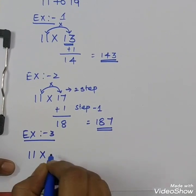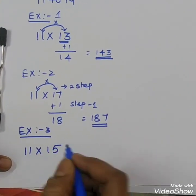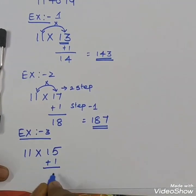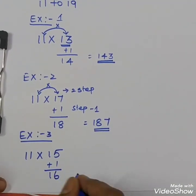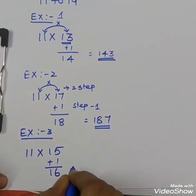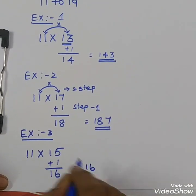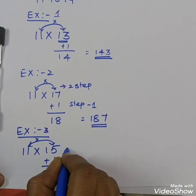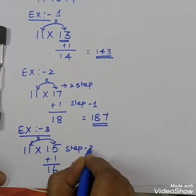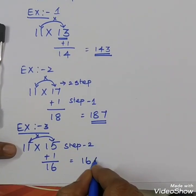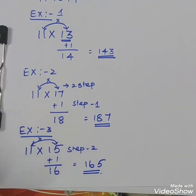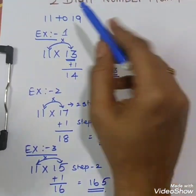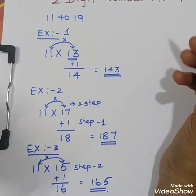Third exercise: 11 into 15. First step: add 1 to get 16. Step 2: multiply these 2 digits — 1 times 5 is 5. So the answer is 165. Like this, you can multiply any number from 11 to 19.